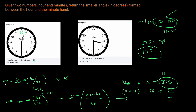So that's the approach we want to take. First, calculate the minute degrees: minutes times 360 divided by 60, which is 6. Then calculate the hour degrees: hour times 360 divided by 12 (which is 30), plus 30 times minutes divided by 60. Then take the absolute value of the difference, and return the minimum of that value and 360 minus it. The code is super simple — literally four lines. Let's go to the code editor.